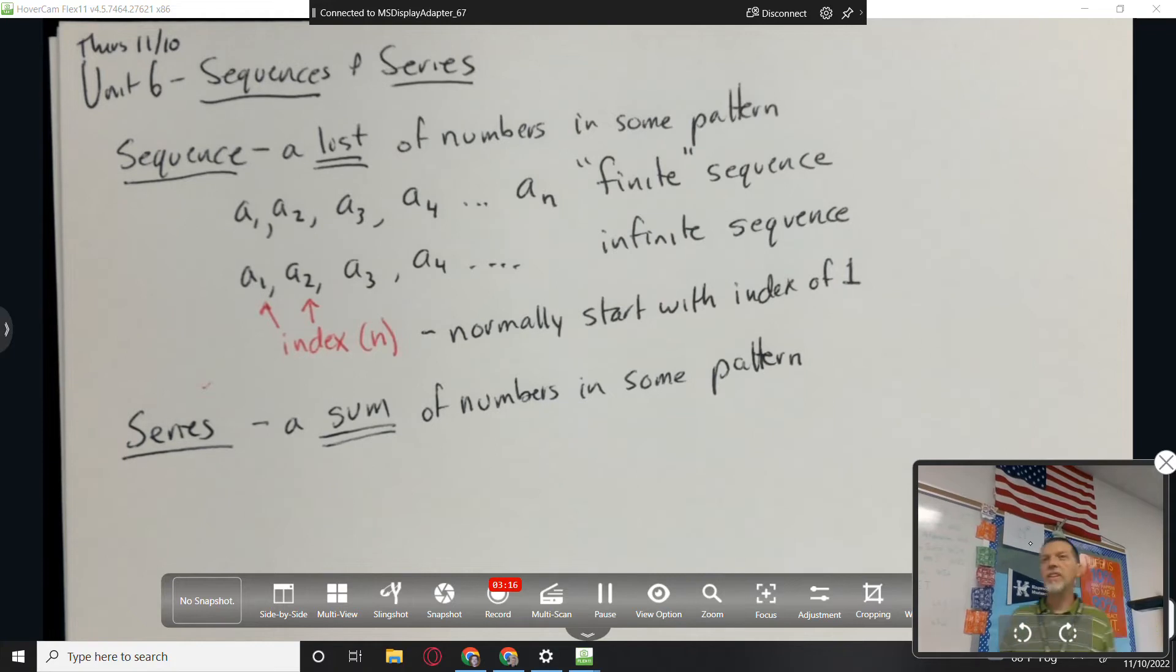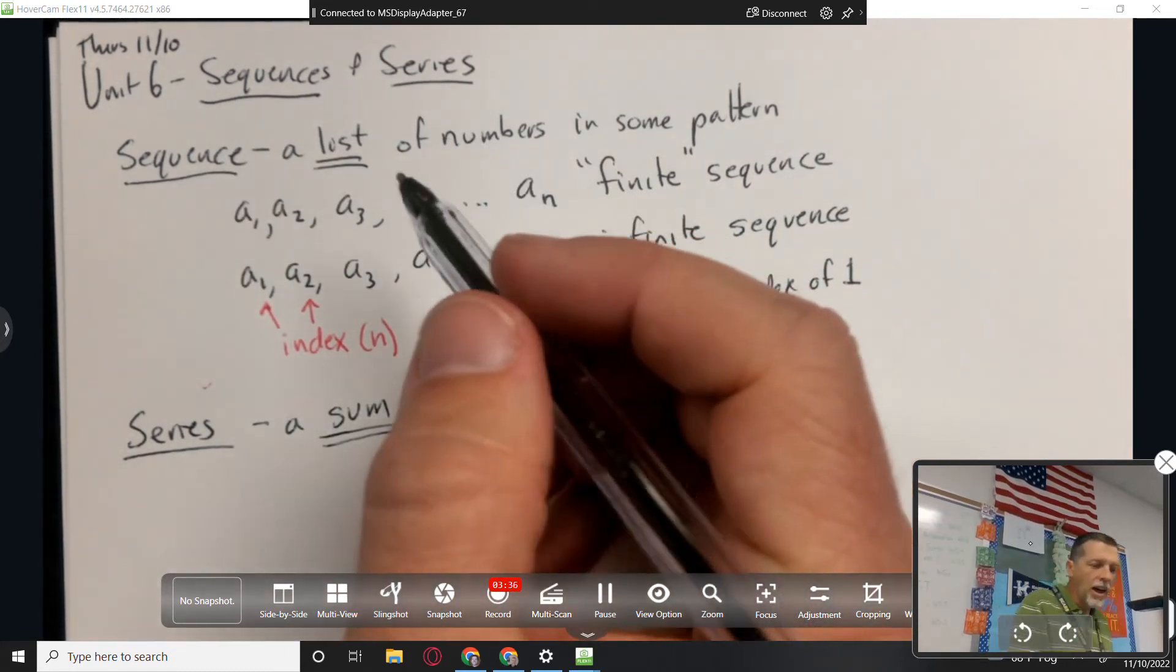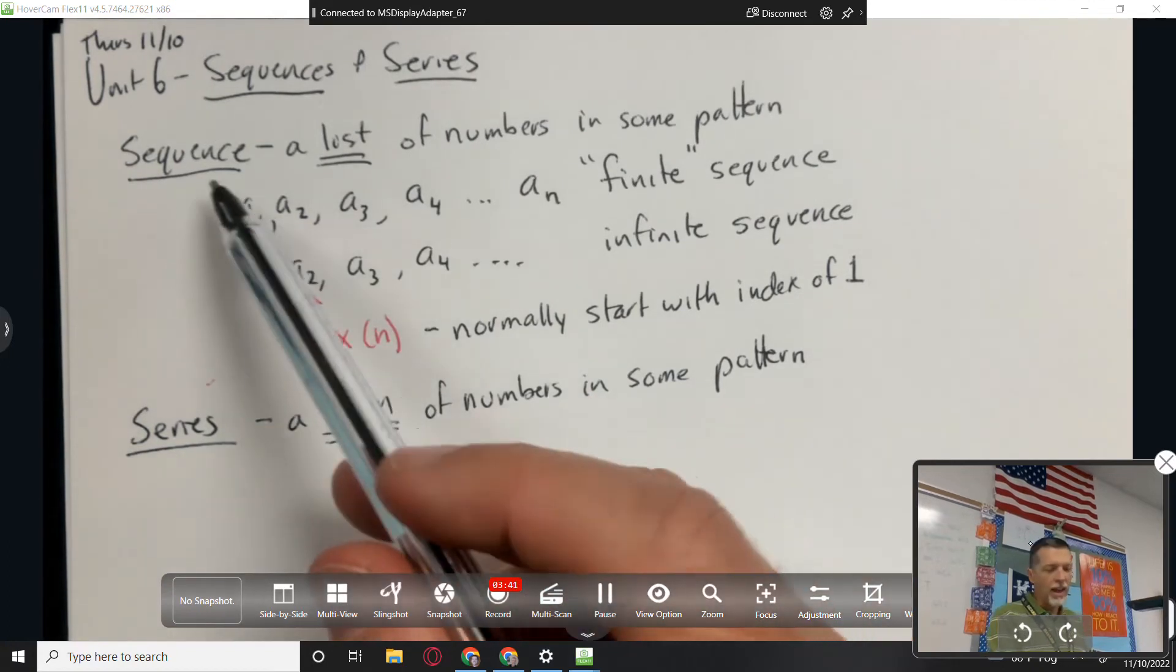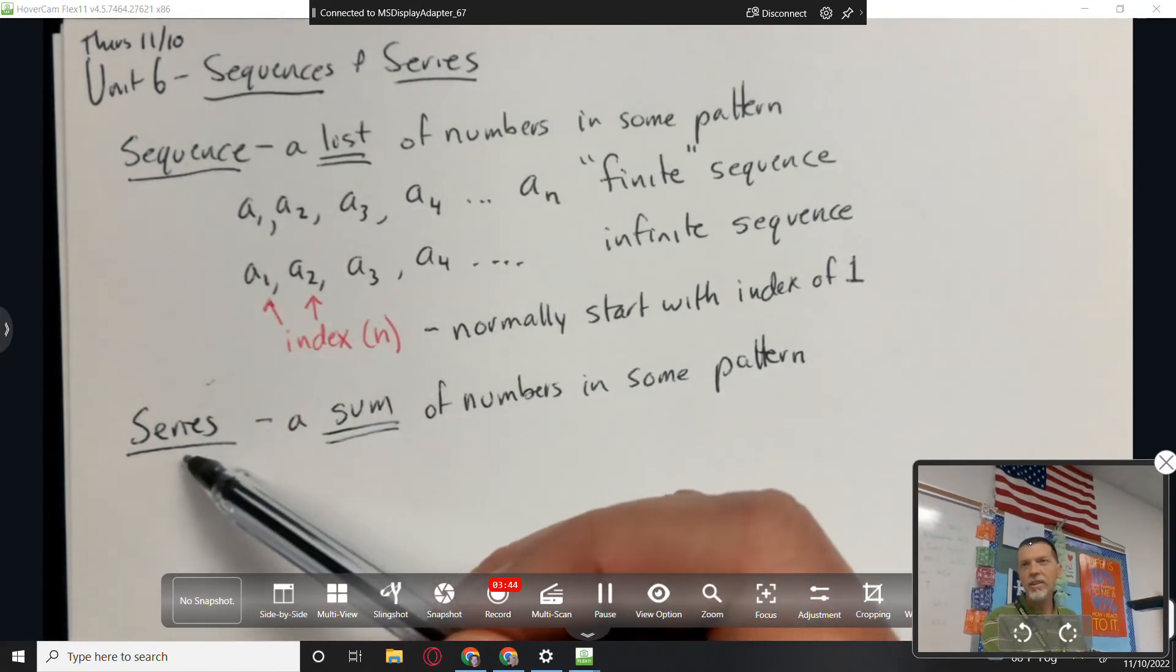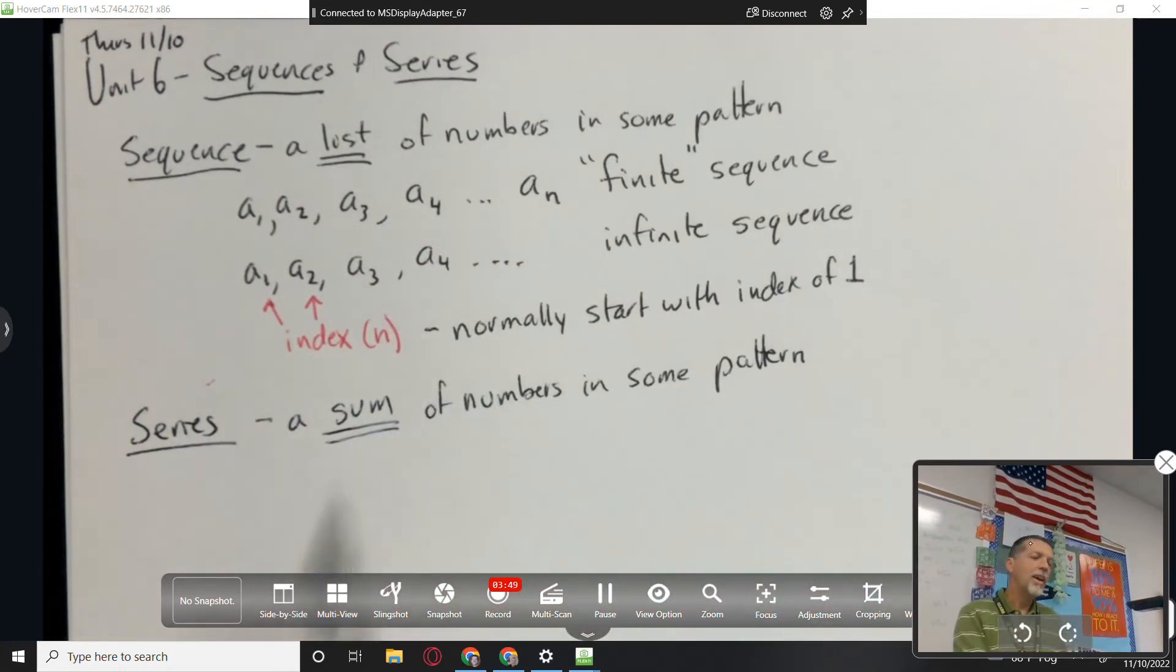Series is a sum of numbers in some pattern. So, the sequence is the list, the series is the sum. Only a couple years ago, I figured out how to keep these straight in my mind, because we hit this once a year, and sequence, series, they don't really give away, the words themselves I don't think lend themselves to knowing that one's a list and one's a sum. How I remember it is, you've got to have the list before you can add them up. And, alphabetically, sequence comes before series. So, that's how I remember that the sequence is the first thing you get, that's just the list. And then, if you want to add them up, the sum, that's the series.